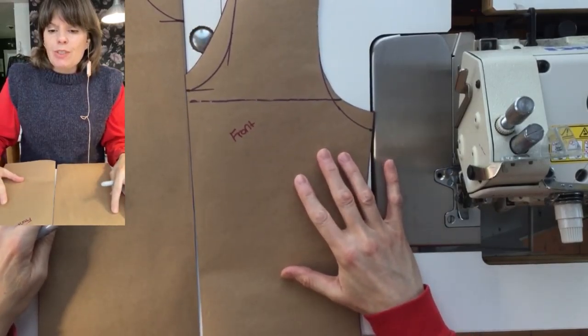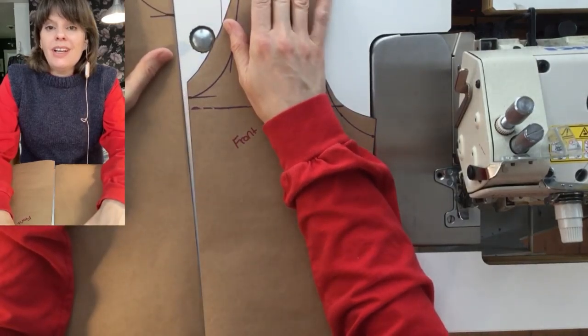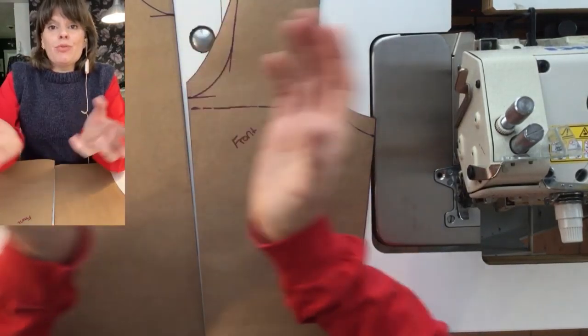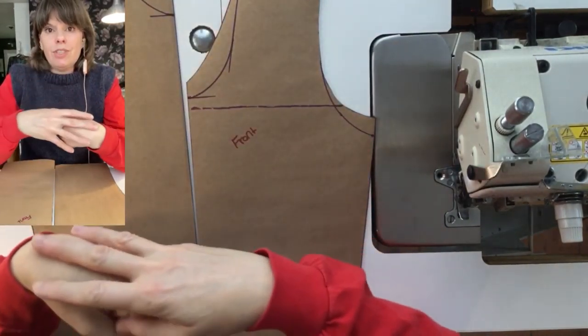So those are some things you can do. You can narrow the shoulders, you just want to make sure you still have room to wrap that one shoulder around the other to finish the armhole.